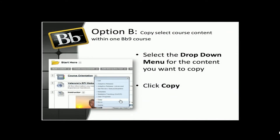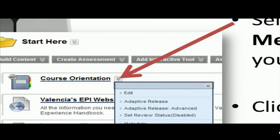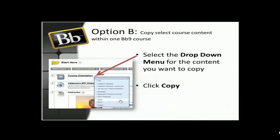The next step is Option B — selecting course material within one Blackboard course. This is accomplished by finding the course content you want to copy inside that course. Select the dropdown menu from the content item you want to copy; you'll notice this on the right-hand side of that material. Once you have selected the dropdown menu, click the Copy button inside it.